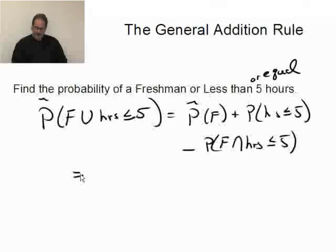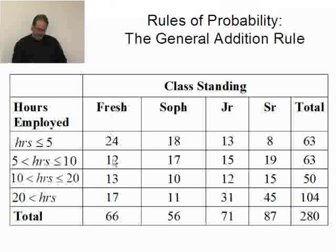So let's get these piece by piece and put it together. The probability of a freshman is 66 out of 280